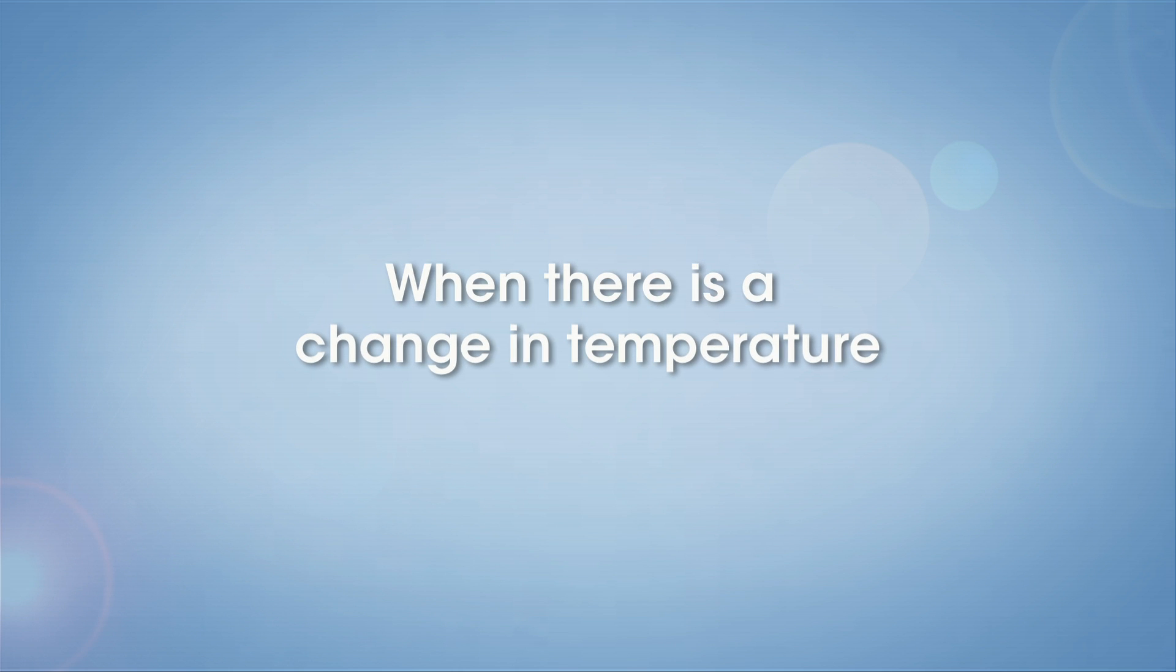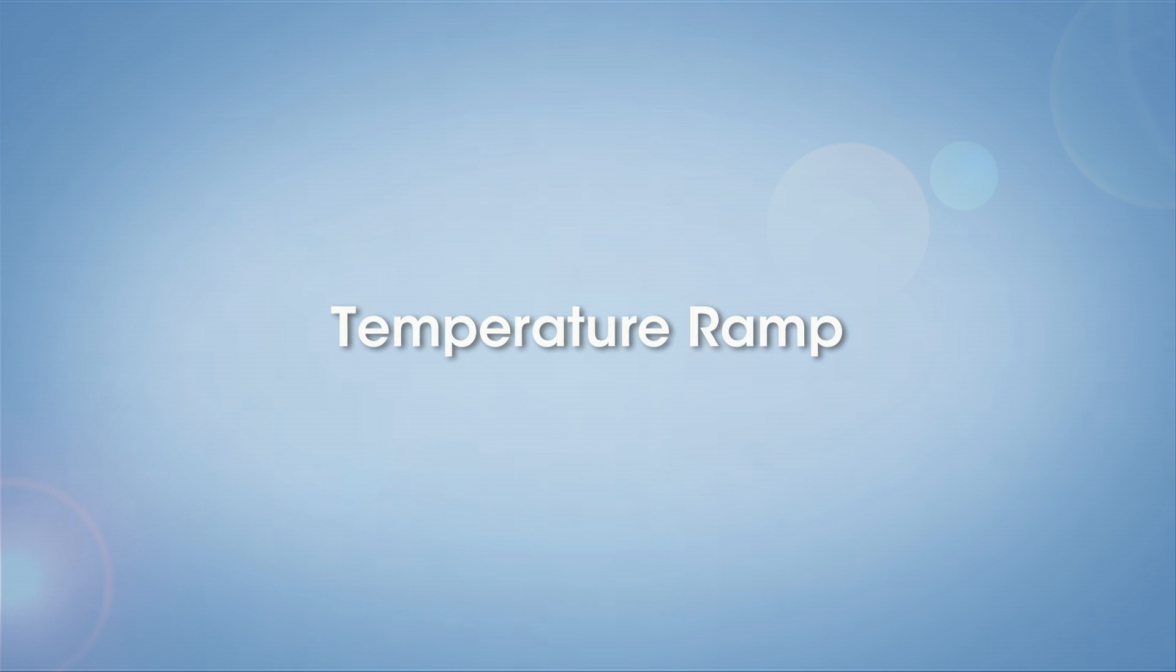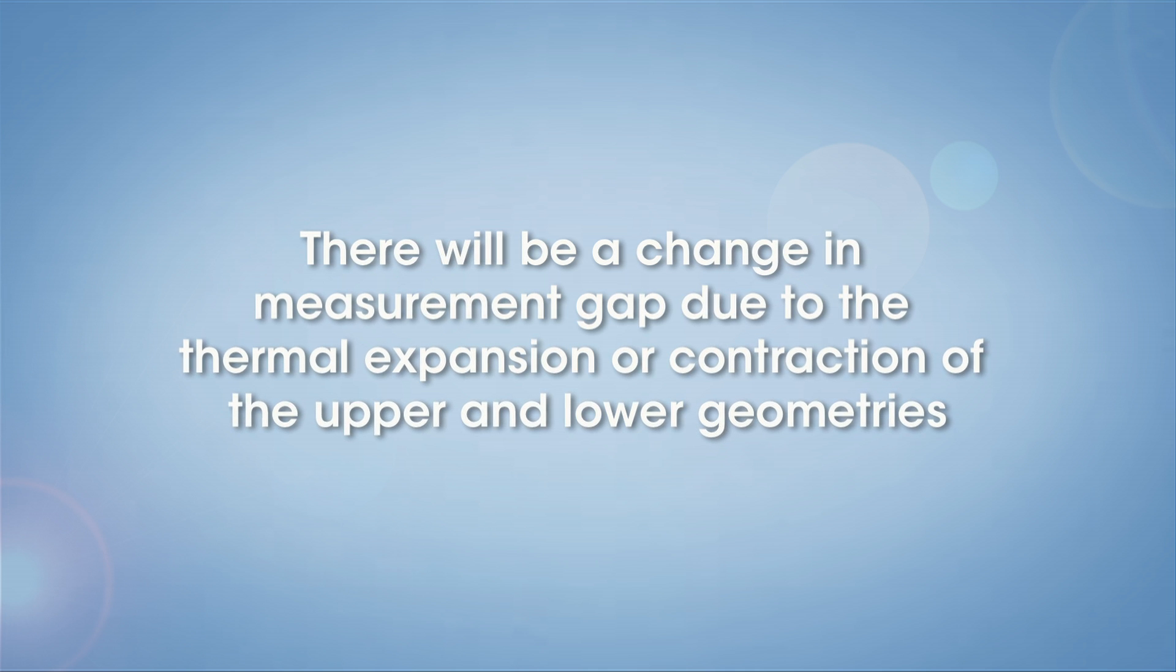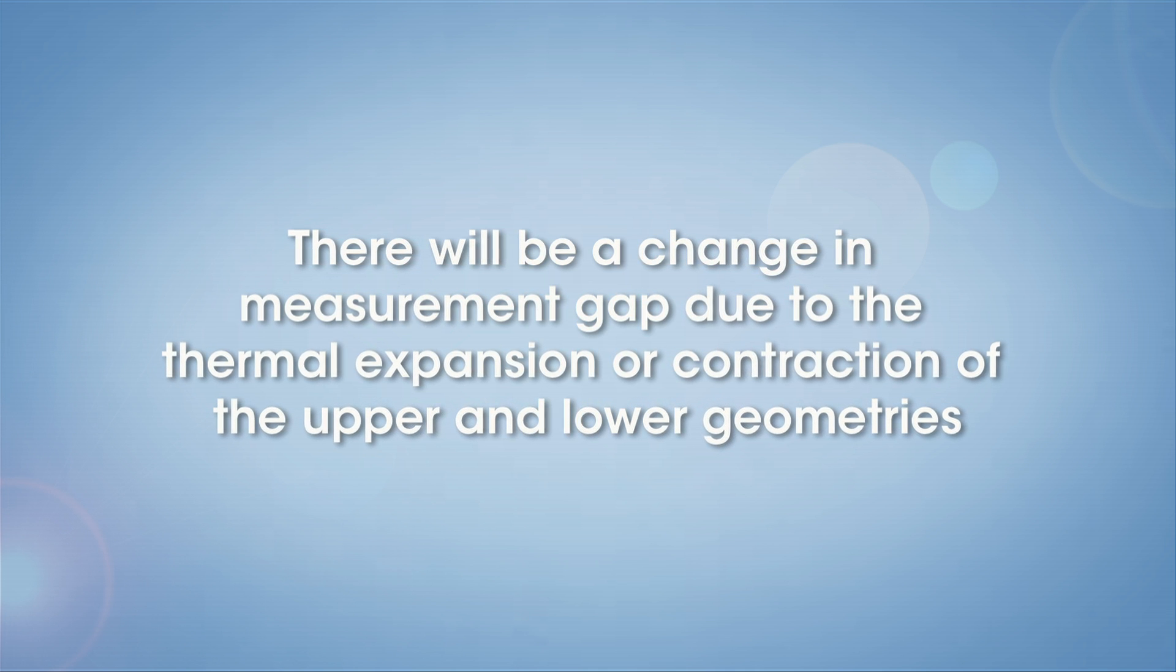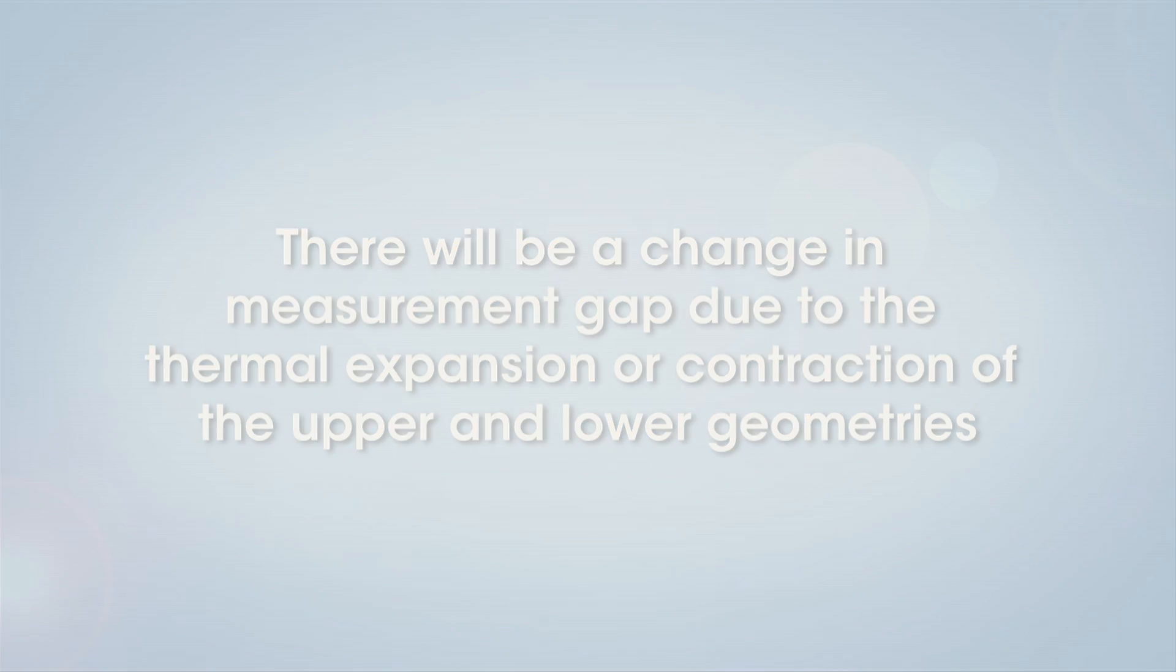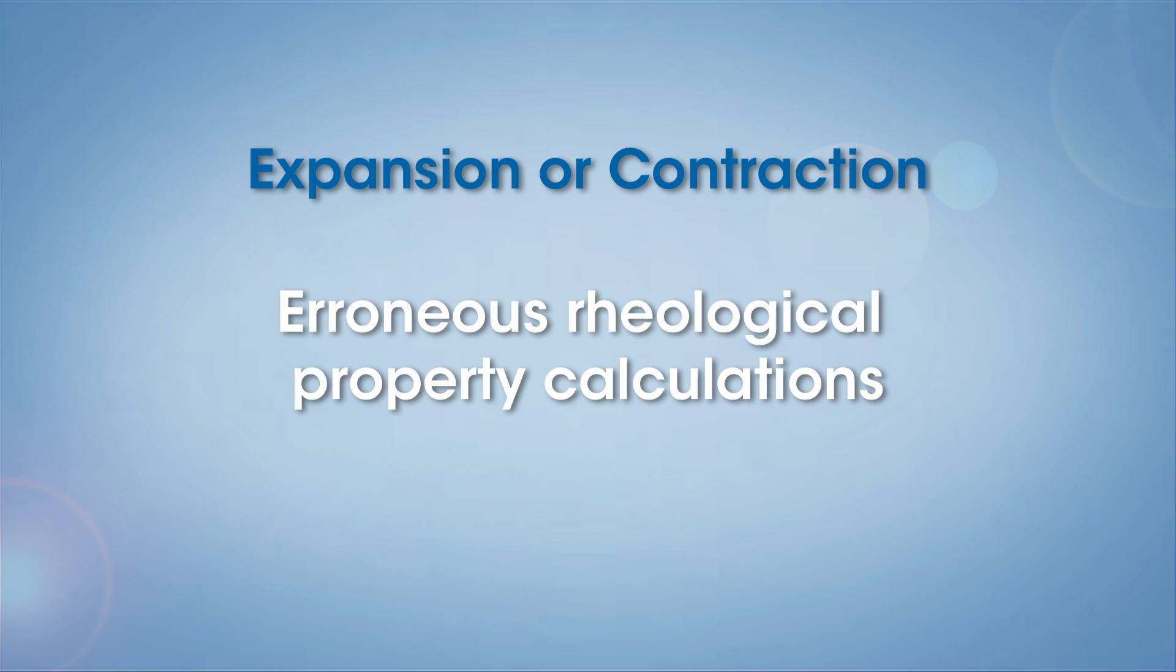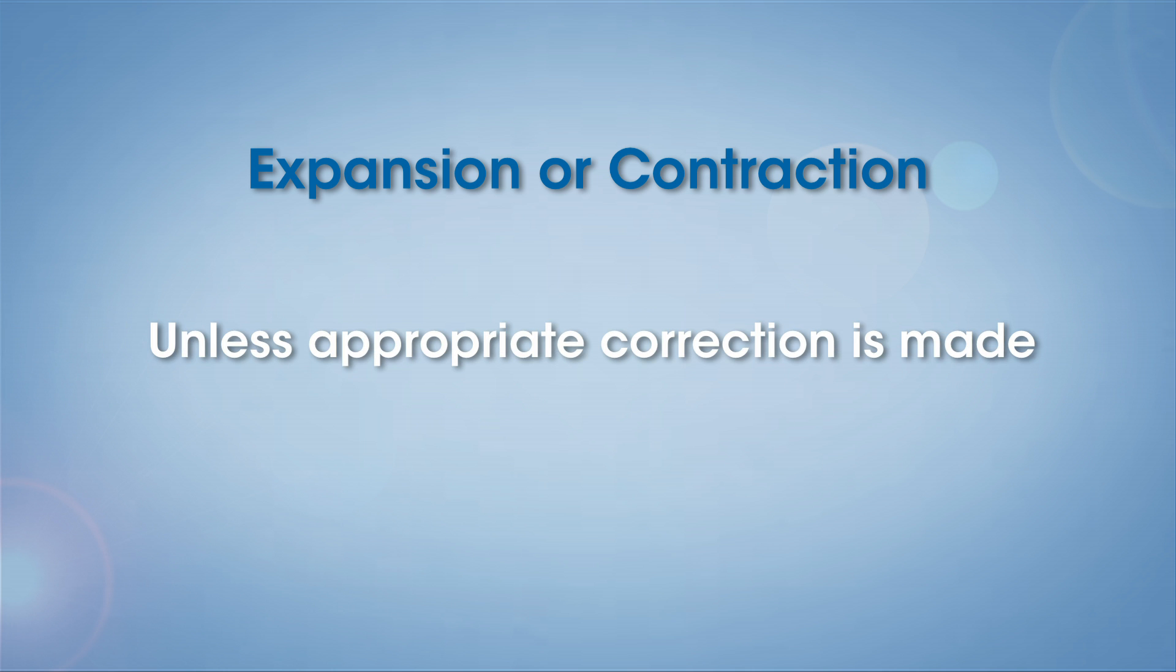However, when there is a change in temperature, like in a temperature ramp or sweep experiment, there will be a change in measurement gap due to the thermal expansion or contraction of the upper and lower geometries. This expansion or contraction will cause erroneous rheological property calculations unless appropriate correction is made.